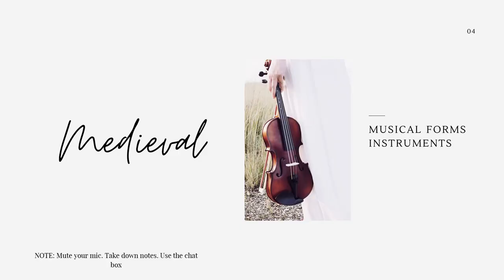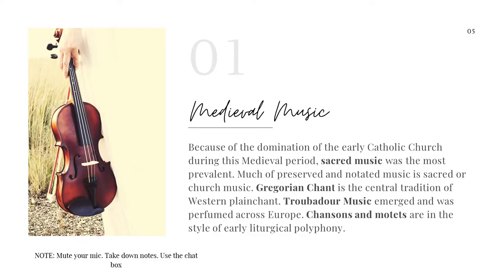First let's talk about the musical forms and instruments from the medieval period. Because of the domination of the early Catholic Church during the medieval period, sacred music was the most prevalent. Much of the preserved and notated music is sacred or church music. When we say sacred music it means church music or religious music. Gregorian chant is the central tradition of the western plainchant.